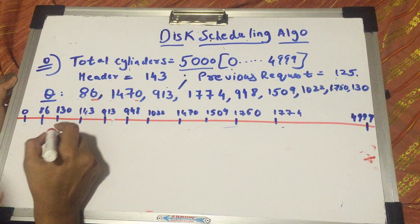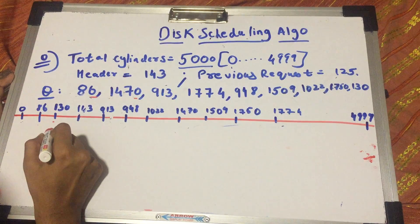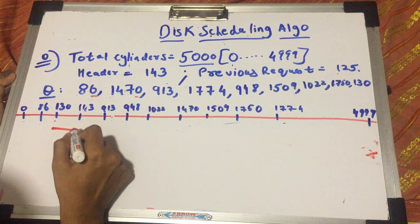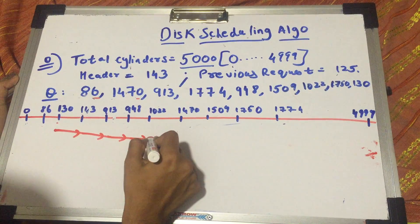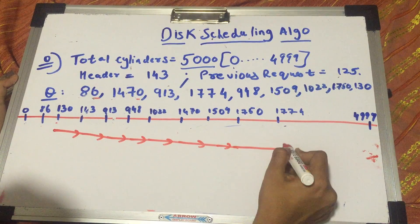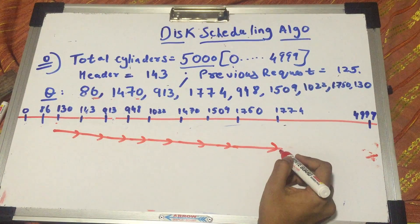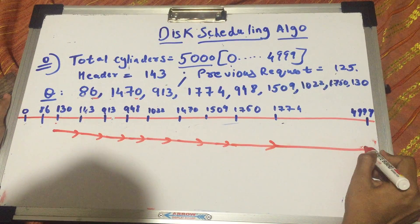So head's here and my direction's in this direction. That's pretty clear by now. First I seek 143, then 913, then 948, then 1022, 1470, 1509, 1750, 1774. Just because it is a scan algorithm, I go way up to the end.